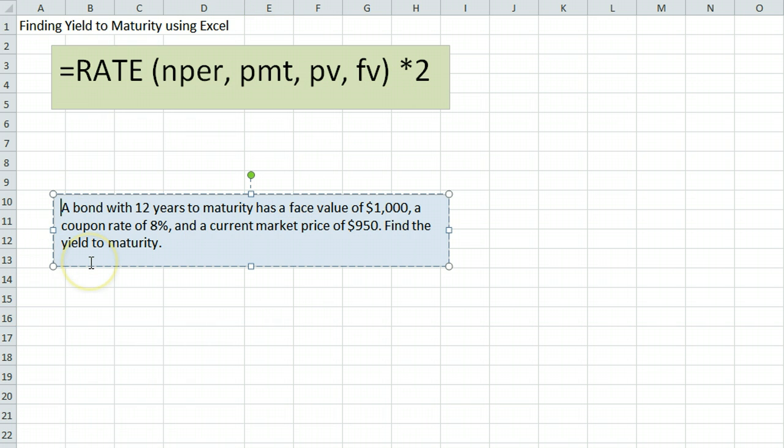The example here is a bond with 12 years to maturity which has a face value of $1,000, a coupon rate of 8%, and a current market price of $950.